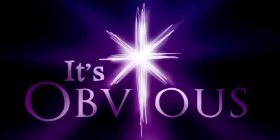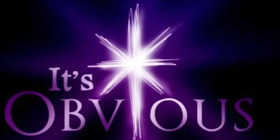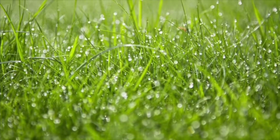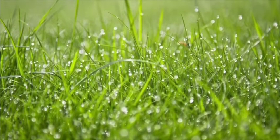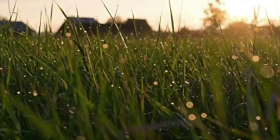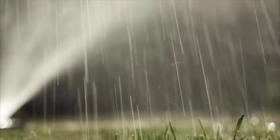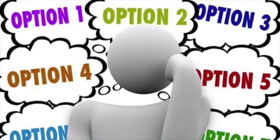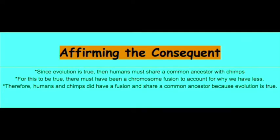They have committed a logical fallacy called affirming the consequent. It goes something like this: if grass is wet, it must have rained — but grass could be wet for a number of reasons: cold temperature in the morning, someone watered it, a dog peed on it. There's a variety of reasons. The same is true here: just because human chromosome 2 looks like a fusion event doesn't mean it is the result of a fusion. That's a logical fallacy.